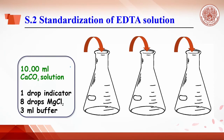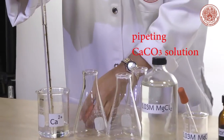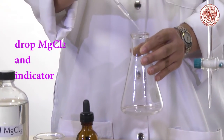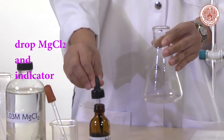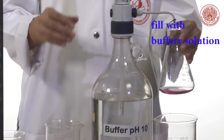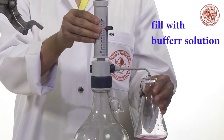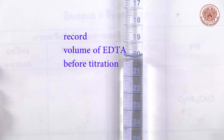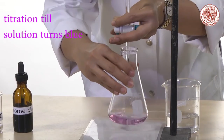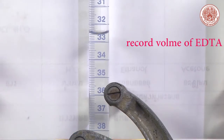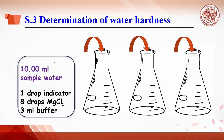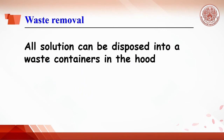In Section 2, standardization of EDTA solution: do the same as Section 1, but replace distilled water with calcium carbonate solution, which is the primary standard. In Section 3, determination of water hardness: do the same as Section 1, but replace distilled water with the water sample. After titration, all solution is disposed of in the waste container in the hood.